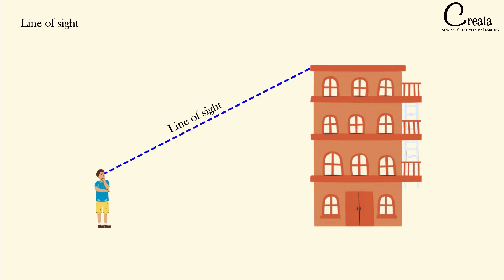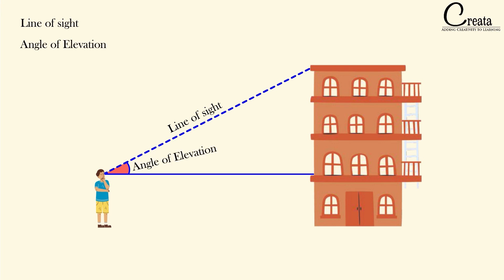If we make an angle from the line of sight with respect to the horizontal line, that angle is called the angle of elevation — this applies when you are looking upward. Do not confuse it with the vertical line; the angle is measured from the horizontal line. During questions, students sometimes confuse which angle is the angle of elevation — make sure it is the angle formed with the horizontal line, not the vertical.